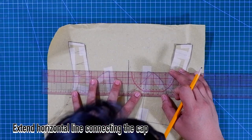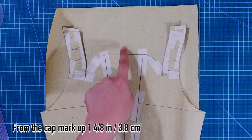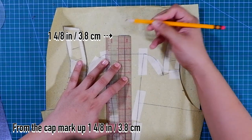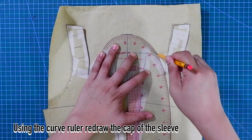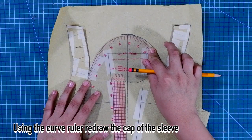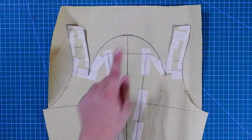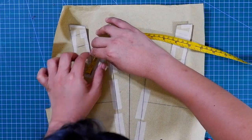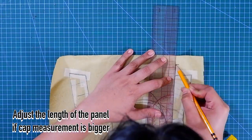Next, I will draw a horizontal line connecting the cap of the sleeve. Next, from the cap of the sleeve at center line, I will mark up 1 1/2 inches or 3.8 centimeters. And this will be the official cap of the sleeve. Using your curved ruler, re-draw the cap of the sleeve. So next, using the flex ruler, measure the cap to make sure that it is the same measurement with the front and the back panels. If the cap measurement is too much, you can adjust the measurements of the panels.